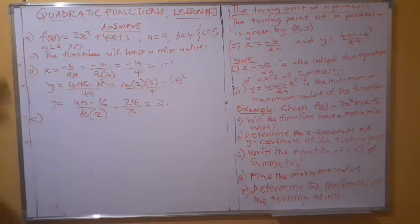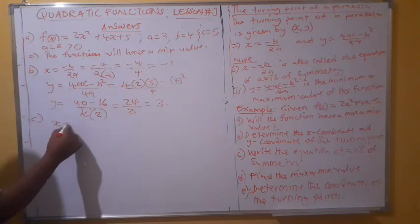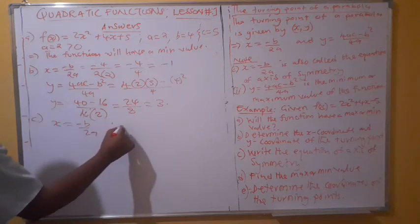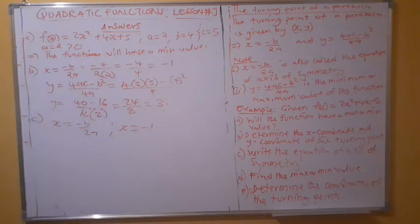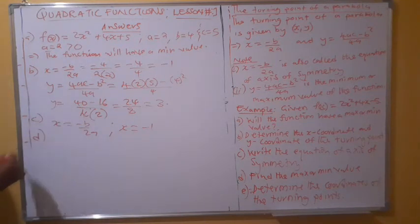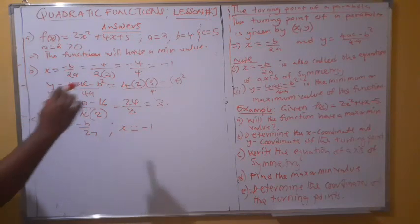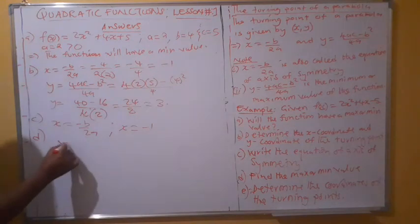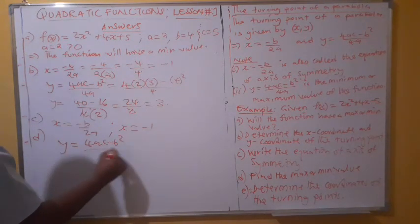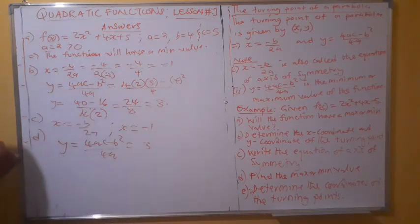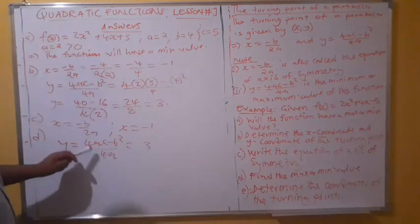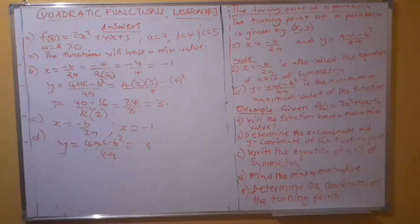For part c, we write the equation of the axis of symmetry. The axis of symmetry is defined by x = -b / 2a, which we already found to be -1. So the equation of the axis of symmetry is x = -1. Make sure to write it as x = -1, not just -1. For part d, we find the minimum value. We have already established this is a minimum, and using the formula (4ac - b²) / 4a gives us 3, so the minimum value is 3.